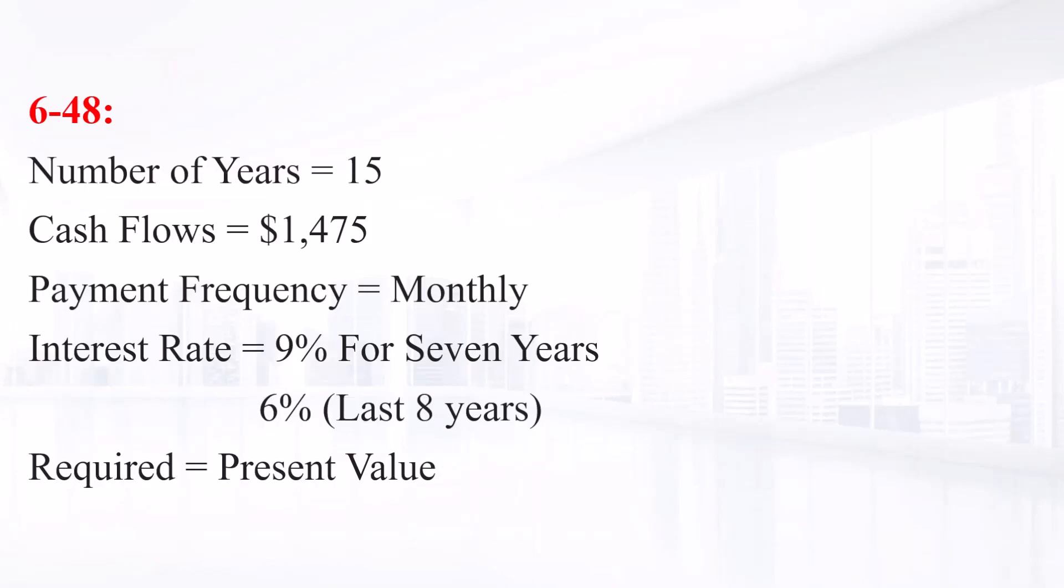A 15-year annuity pays $1,475 per month, with payments made at the end of each month. The interest rate is 9% compounded monthly for the first seven years and 6% compounded monthly thereafter.